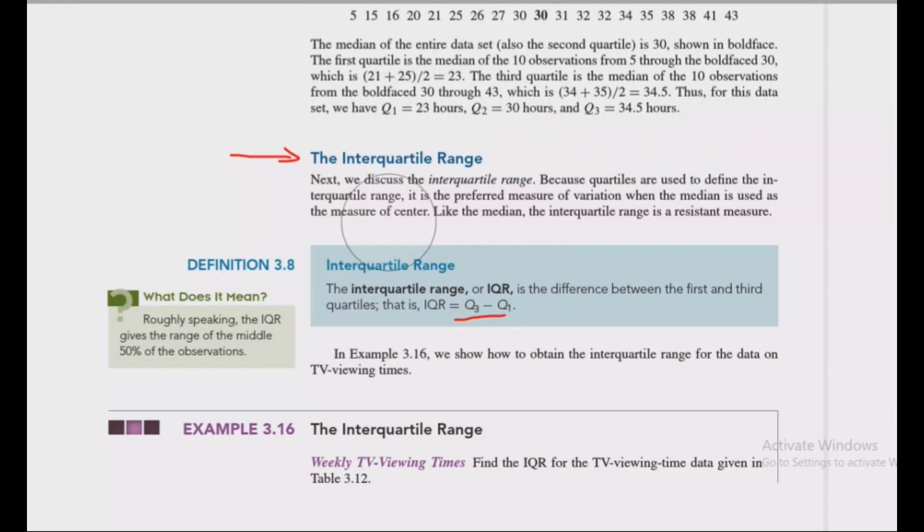What is the use of interquartile range? Both quartiles are used to define interquartile range. Quartile 1, quartile 2, quartile 3. Quartile 3 minus quartile 1 gives the interquartile range. This is the preferred measure of variation.